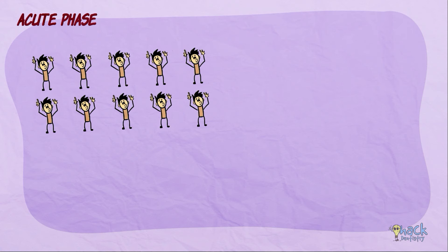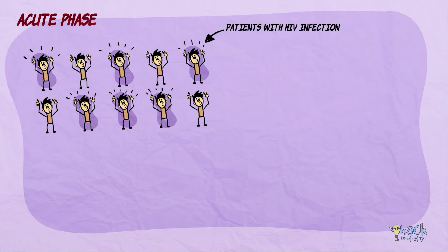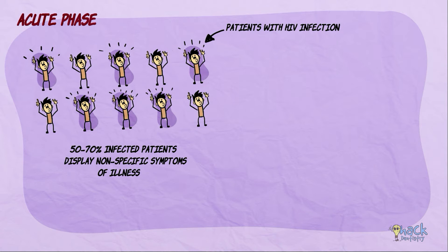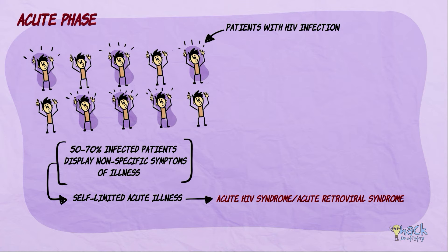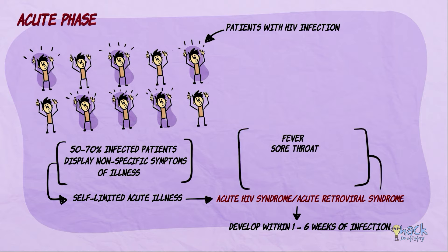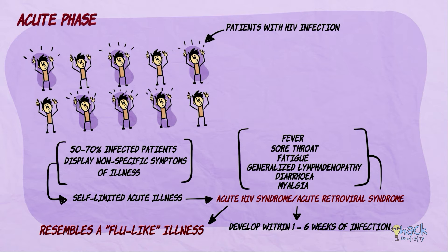Most patients — around 50 to 70 percent — in the acute phase of HIV infection display non-specific symptoms of illness. This is a self-limited phase called acute HIV syndrome or acute retroviral syndrome. Symptoms may develop within one to six weeks after infection. Patients may exhibit fever, sore throat, fatigue, generalized lymphadenopathy, diarrhea, and myalgia. The illness resembles a flu-like syndrome.